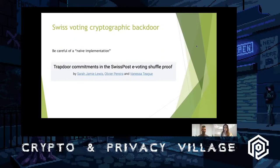One big thing to watch out for is cryptographic backdoors — these are tough to catch. Switzerland has been doing online voting, and researchers looked into their mixnet shuffle proof and found a naive implementation of the zero-knowledge proofs inside, which would have allowed an attacker to change all the votes. Every last inch of the app needs to be very carefully implemented, especially the cryptography — the coder must be aware of all cryptographic assumptions and implement everything properly.